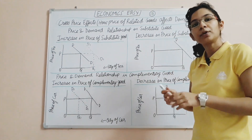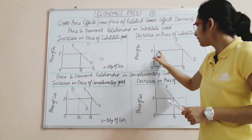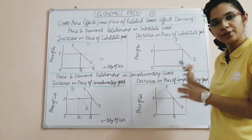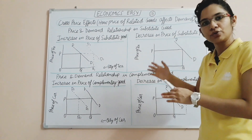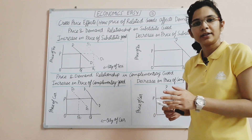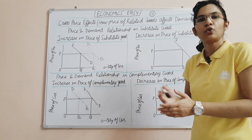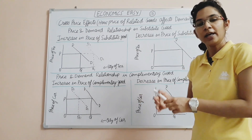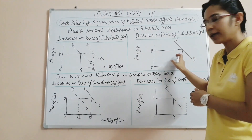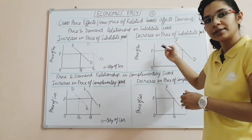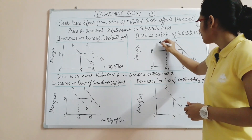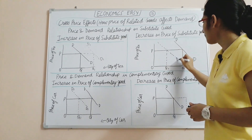Now consider a decrease in price of the substitute good — coffee's price has come down. Tea's price remains the same at OP, OQ is the original quantity, and DD is the original demand curve. If coffee was 10 rupees and is now 8 rupees, consumers will switch to coffee since it is cheaper. So the demand for tea decreases — the demand curve for tea shifts backward to D2, even though tea's price is unchanged.